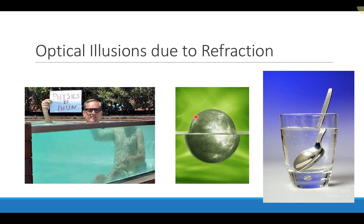Here's another example of an object floating in water that appears to be a different size. A simple example we can do at home is to put a spoon in a container of water — it looks like the spoon has been cut, which is again an optical illusion. Light doesn't bend as it travels through air, but when it travels through the water and reaches our eyes, it makes the top and bottom of the spoon appear discontinuous.